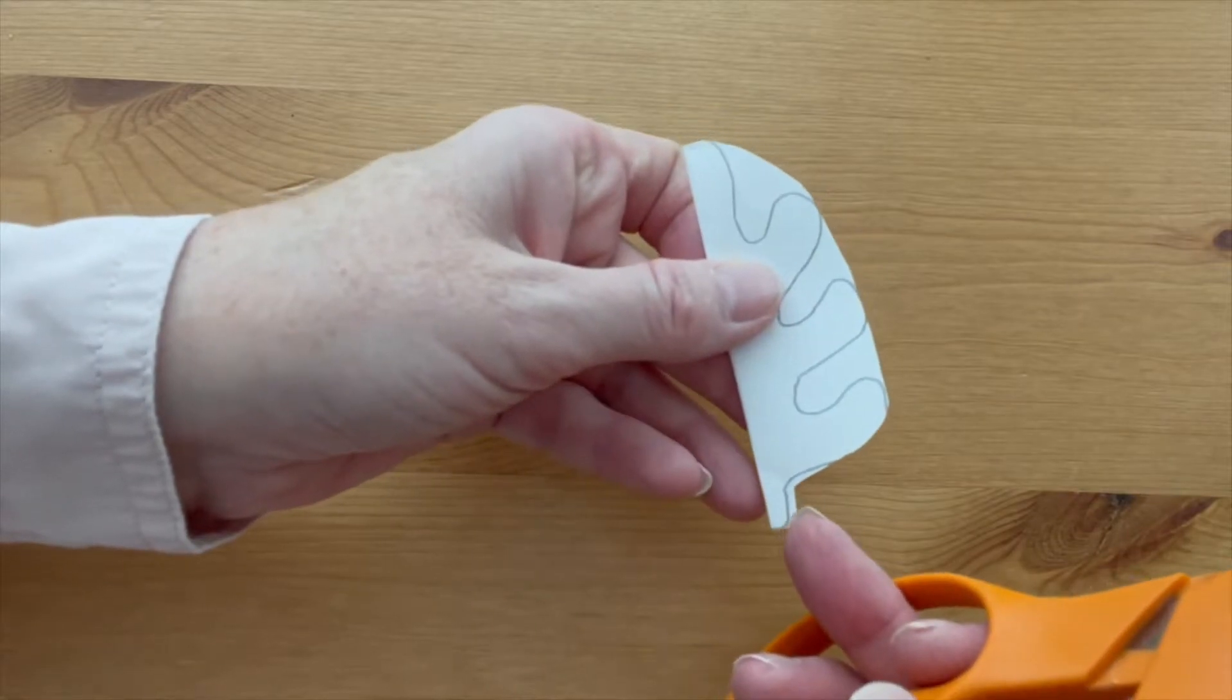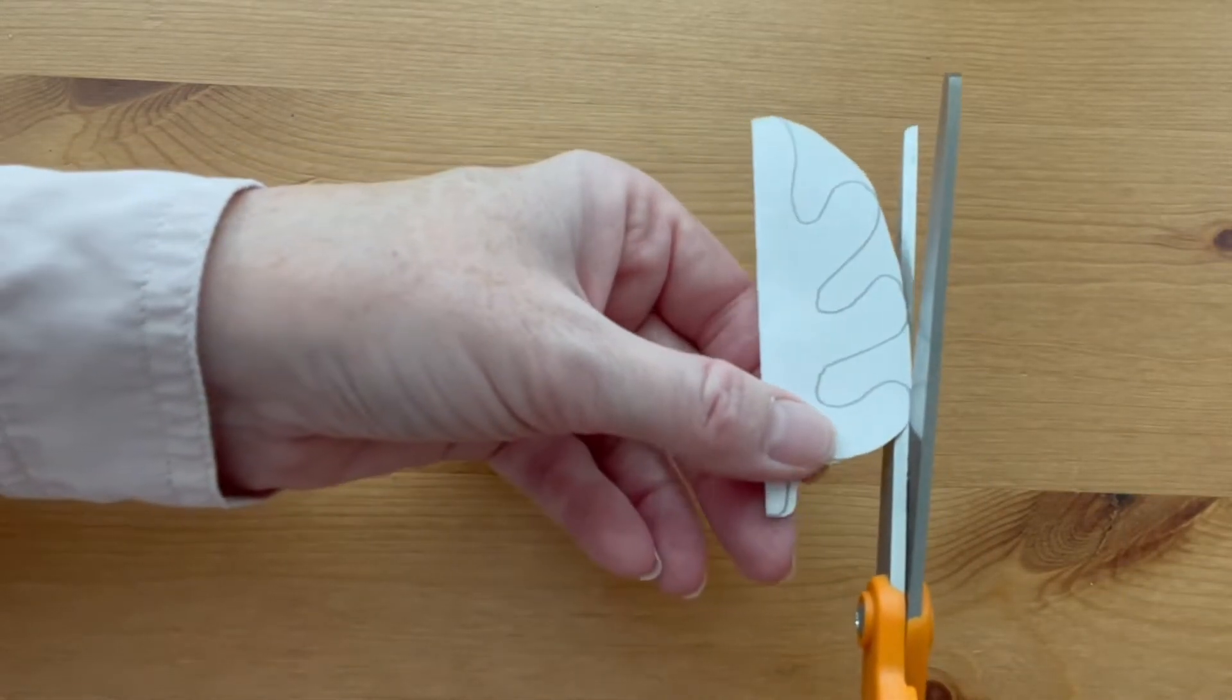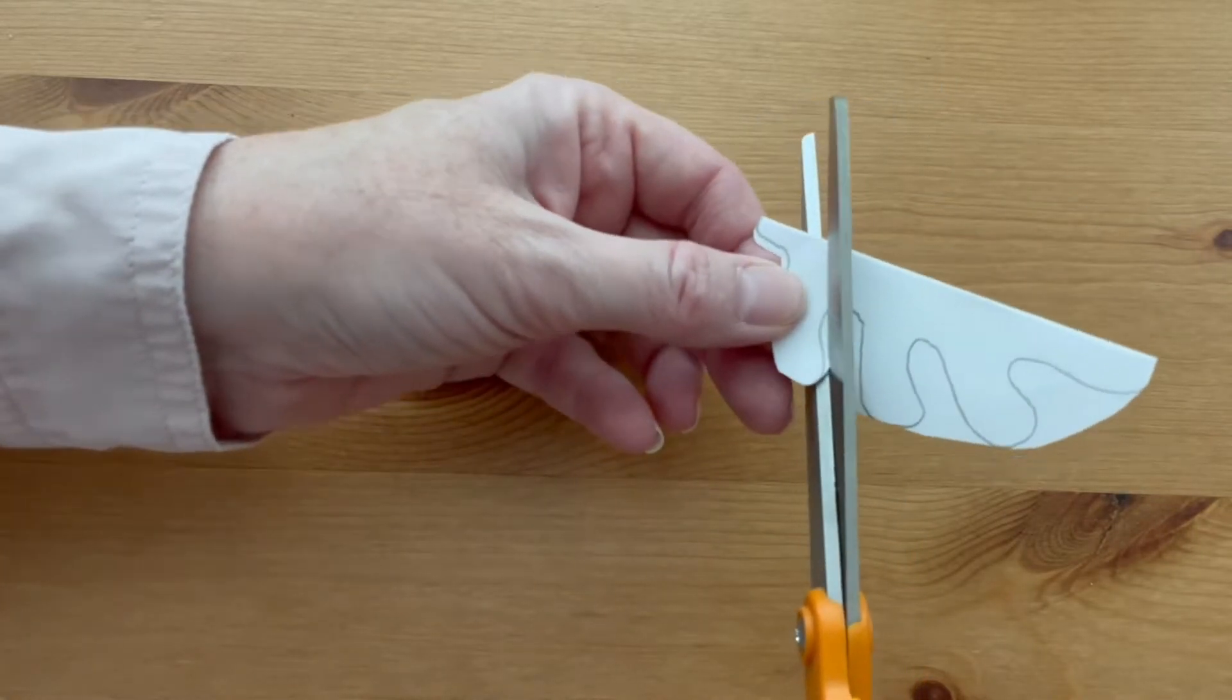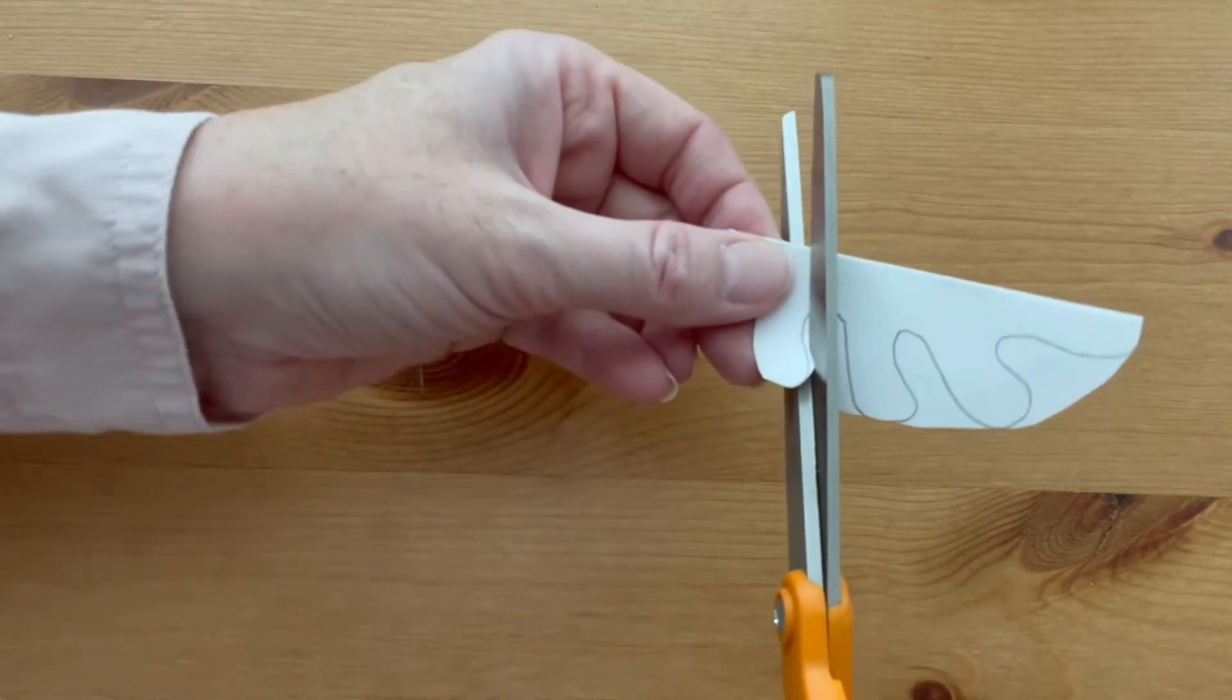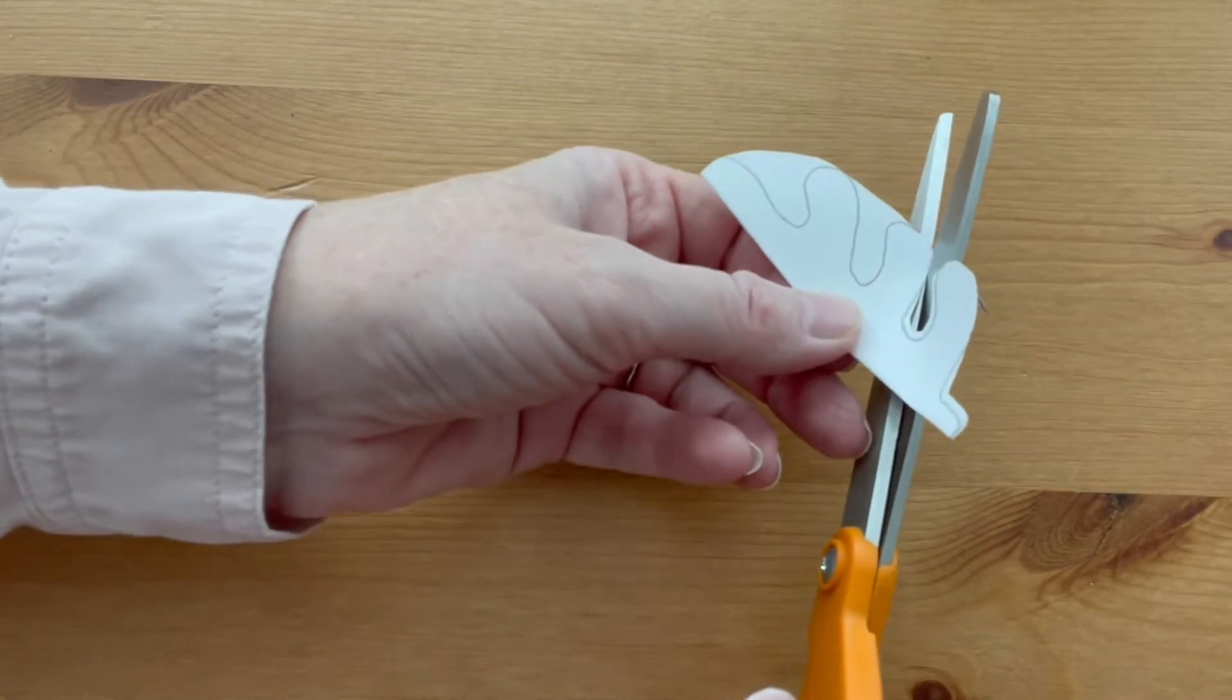You do want to leave a long enough stem so that you have room to thread these on and put a bead on there, so make sure that you leave a stem of at least about a quarter of an inch. Now you notice I'm not cutting this out perfect.